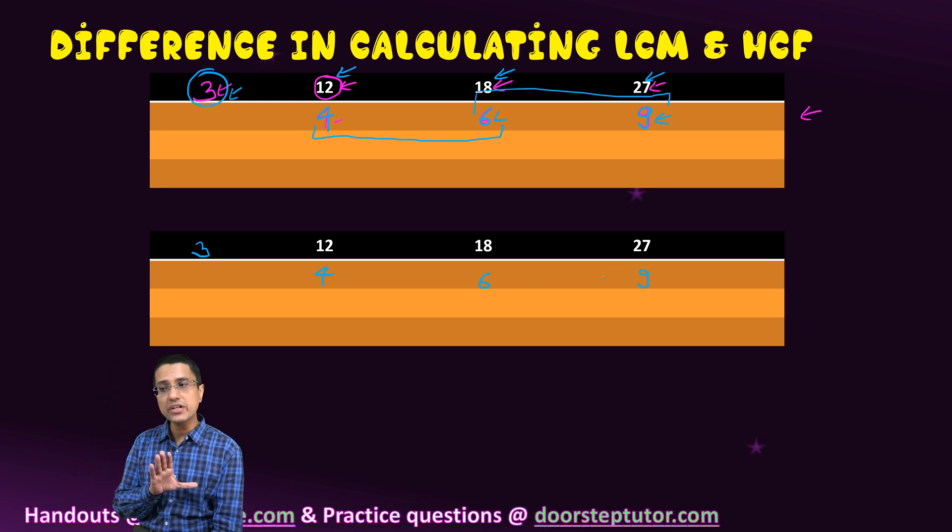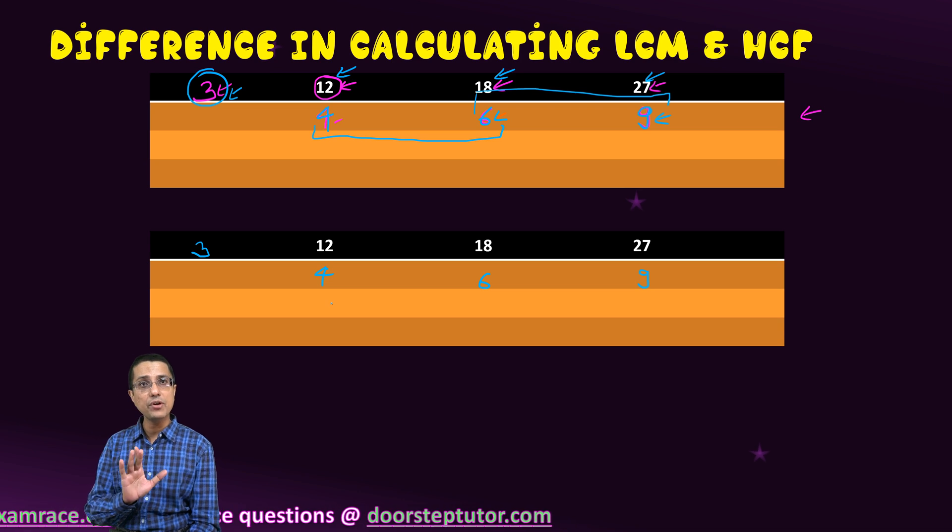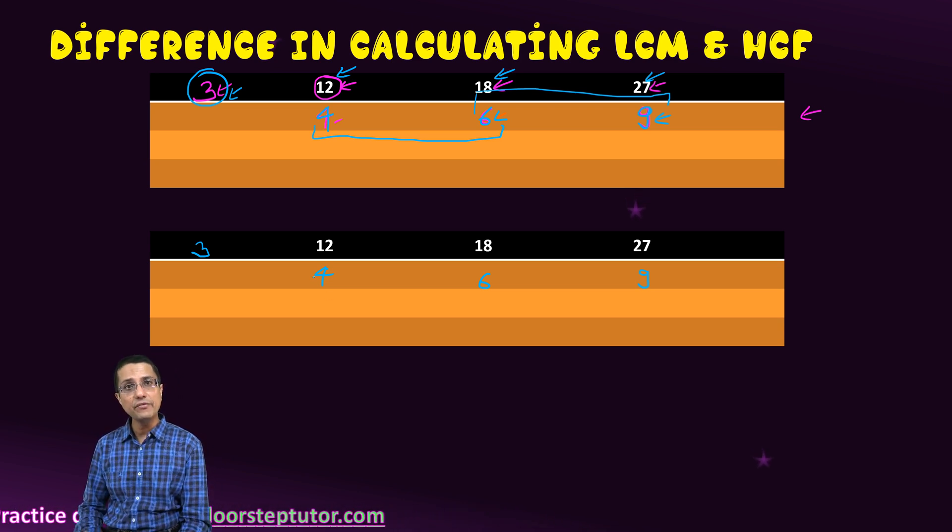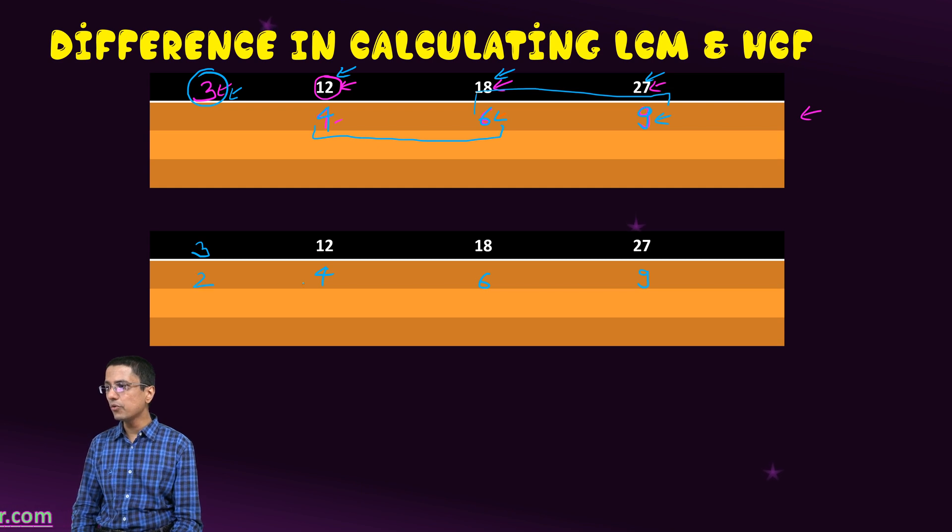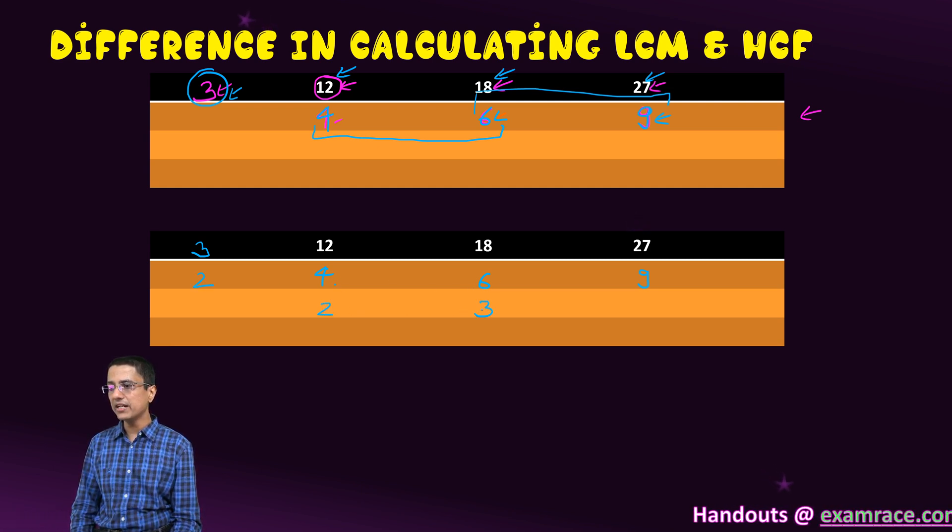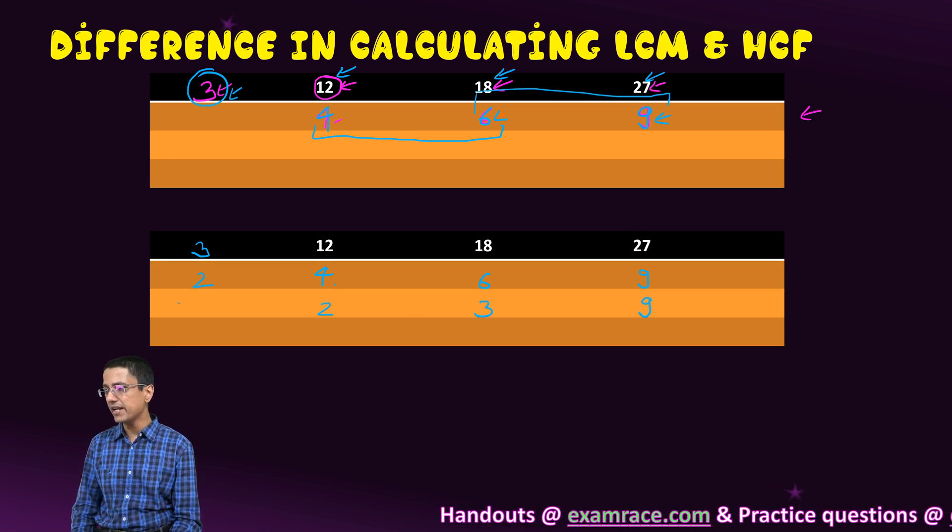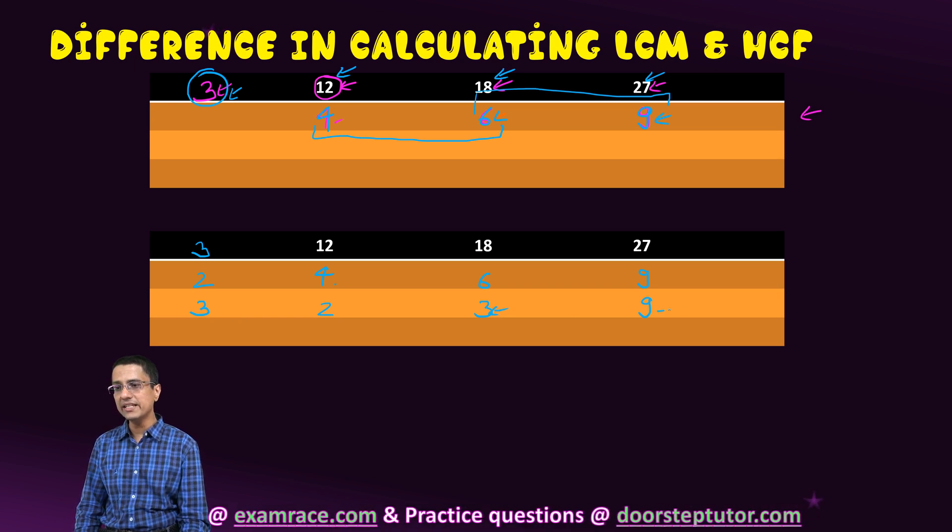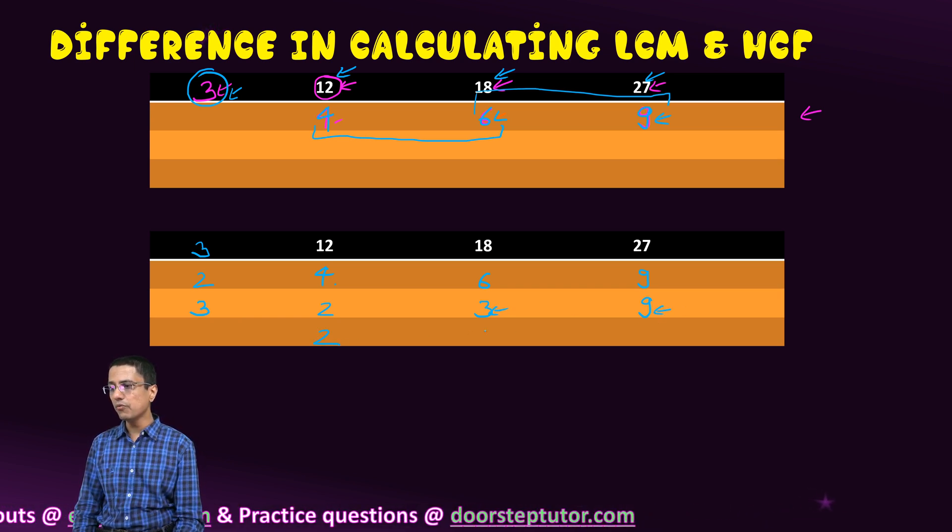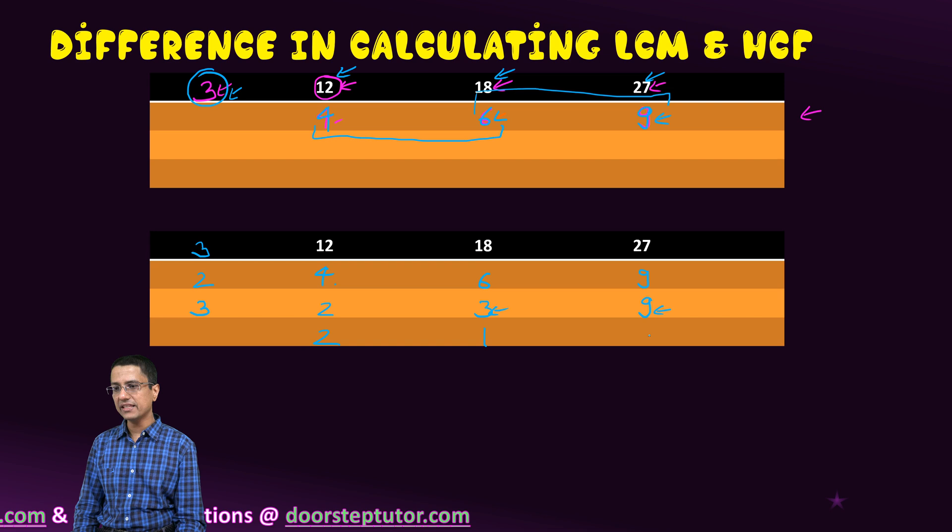After that also the division continues as long as we're able to find a factor which is common to at least two numbers. So now we will use 2 because it's common to these two numbers and we will continue the division, and of course the 9 would come as is because this cannot be divided. And then we will use 3 again because 3 is common to at least these two numbers. So 2 would come as such, and then 3 ones are 3, 3 threes are 9.